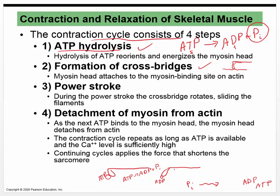The hydrolysis of ATP is how energy is released, and that energy is transferred into what we sometimes describe as 'cocking' the myosin head — like setting a mousetrap. You put in the energy when you set the mousetrap, pulling it over until it's spring-loaded and ready to go. Then there's the formation of the cross bridge — the myosin attaches to the actin as long as it has access and tropomyosin isn't in the way.